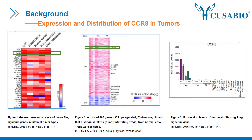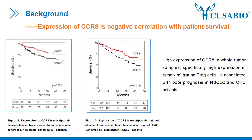As these figures show, CCR8 is highly expressed in different tumors and mainly located on tumor-infiltrating Treg cells. Moreover, high expression of CCR8 in whole tumor samples — specifically high expression in tumor-infiltrating Treg cells — is associated with poor prognosis in NSCLC and CRC patients.